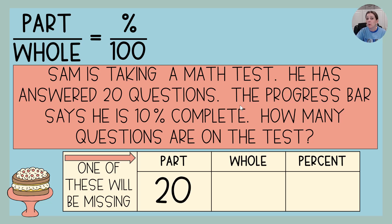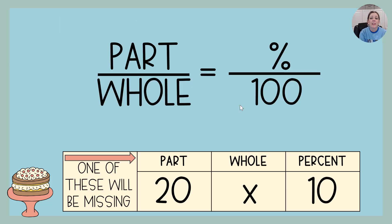What about the whole? How many questions are on the test? We don't know. That's our unknown. So we're going to call it X. And then last but not least is that percent. That one's real easy to see because there's a percent sign, and so that's 10.